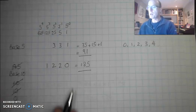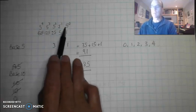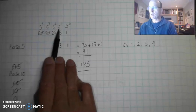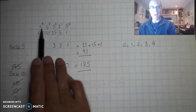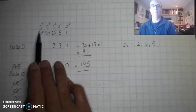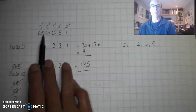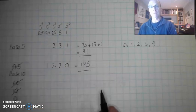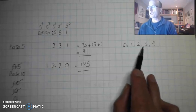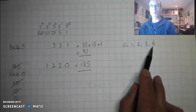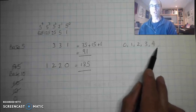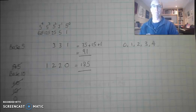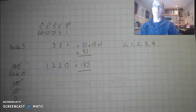To summarise: if we're working in base 5, that's the number we use as the base raised to the relevant power to calculate the value of each column. If I've got base 5, I'm going to use 5 digits: 0, 1, 2, 3, 4 — stopping one number short of the base. Now it's your turn — have a look at the document and give the questions a go.